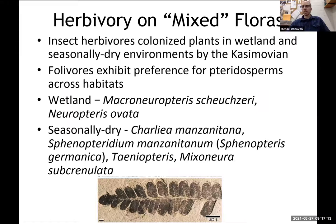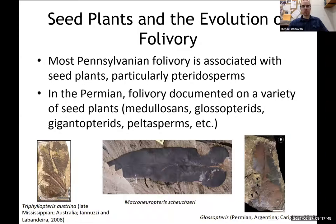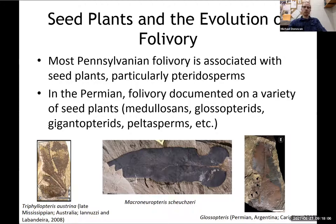The herbivory on mixed floras shows that insect herbivores colonized plants in both wetland and seasonally dry environments by the Casimovian. It's possible this occurred earlier but we haven't looked at enough floras to say that yet. Leaf-feeding insects exhibited a preference for pteridosperms across habitats — pteridosperms that live in both types of environments — so they had lots of food to choose from. Seed plants seem to play an important role in the evolution of feeding on leaves. Most Pennsylvanian folivory is associated with seed plants, particularly the medullosans and pteridosperms. In the Permian, this diversified a lot with many more seed plants being attacked by insects, adding to the increase in damage type diversity seen in the Permian.